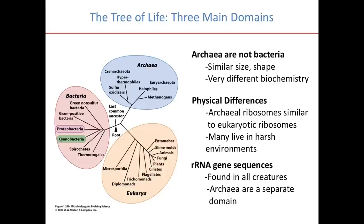The key thing is that ribosomal RNA genes — rRNA genes — are found in all species. So if you sequence a ribosomal RNA gene, you can compare it, with some caveats, among bacteria, archaea, and eukaryotes. Once they sequenced rRNA genes, they were able to build phylogenetic trees based on those sequences, and they found that archaea actually represent a completely separate domain of life — they are not simply weird bacteria.